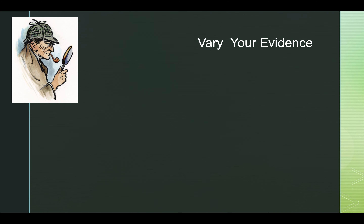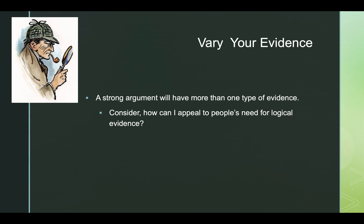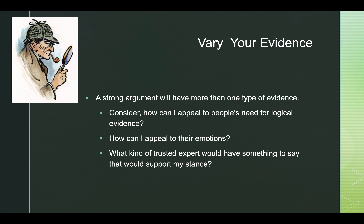When you're using evidence in your own work, think about the fact that you want to use different types — don't rely on just one. To make your argument strong, you want different things going on. Think to yourself: how can I appeal to people's desire to hear logic — statistics, facts, examples? How can I appeal to their emotions — how might people feel about this? And finally, what kind of trusted expert would have something to say that supports what I'm trying to say? So if I'm trying to argue that we should ban alcohol in all 50 states, I'm going to look for a doctor, an ethics professor, or a police officer who has seen many DUIs to support my stance and back myself up.